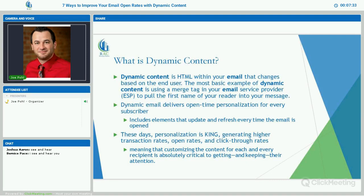So what is dynamic content? Dynamic content is HTML within your email that changes based on the end user. The most basic example is using a merge tag in your email service provider, which pulls the first name of your reader into your message. If you use an email marketing service like MailChimp or Constant Contact, they give you the option to merge people's names into your subject lines and into the email itself. It's all about personalization.